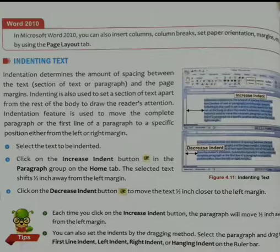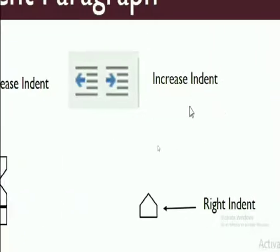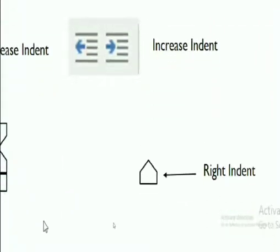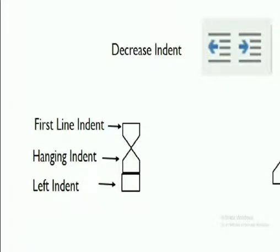Let's look at these in practicals. In indentation, we have two buttons — Decrease Indent and Increase Indent — which we find on the Home tab in the paragraph group. After that, on the horizontal ruler bar, we get the first line indent, hanging indent, and left indent markers. Above those, we also have the right indent.